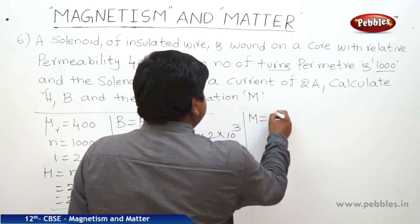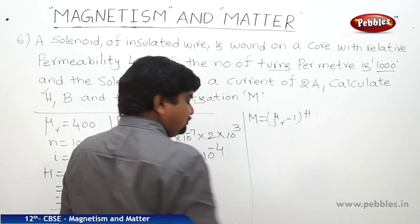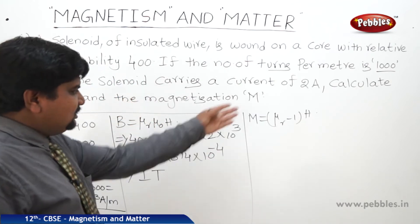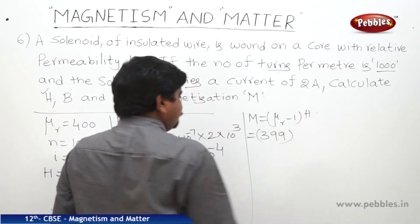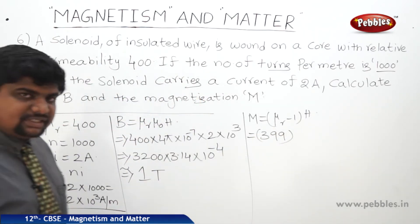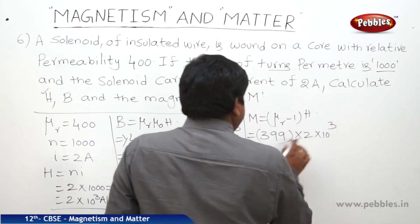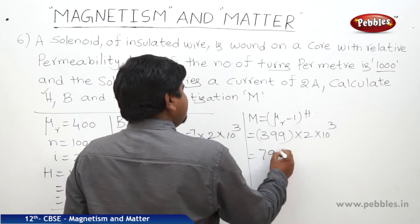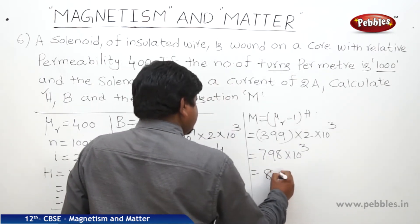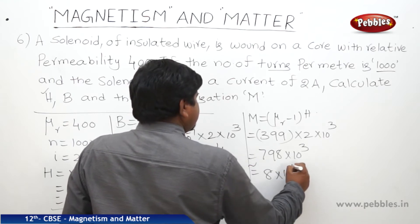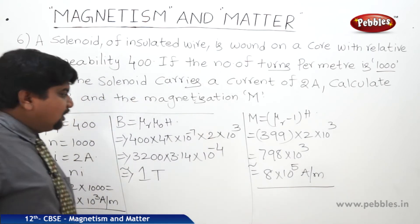For magnetization M: M = chi × H, where chi = mu_R − 1. So M = (mu_R − 1) × H = (400 − 1) × 2×10³ = 399 × 2×10³ = 798×10³, approximately 8×10⁵ A/m.